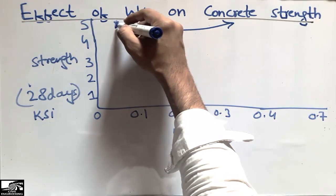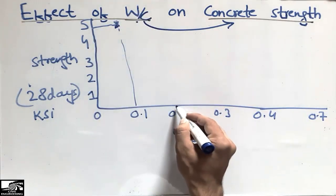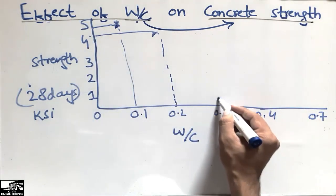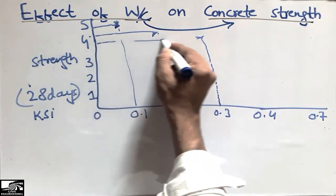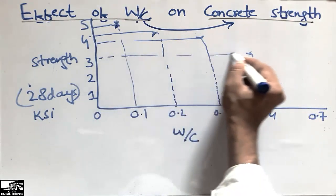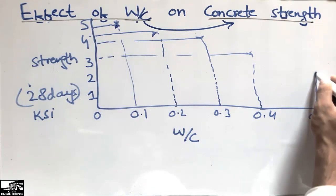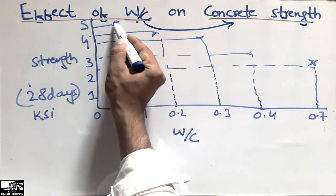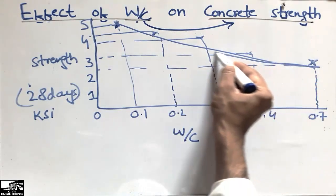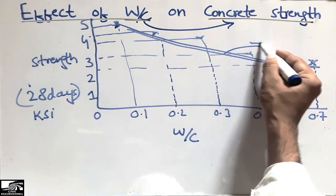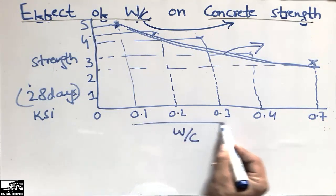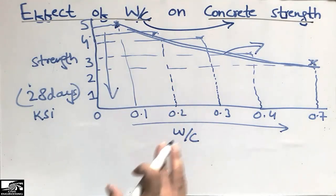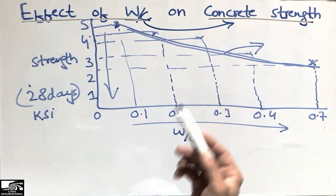At a low water-cement ratio, the concrete is at high strength. As the water-cement ratio increases, the strength decreases. Increasing the water-cement ratio further causes the concrete strength to fall even more. The curve shows that with increasing water-cement ratio the concrete strength falls continuously. We should be careful when defining the water-cement ratio for a specific project, as it should be carefully designed.